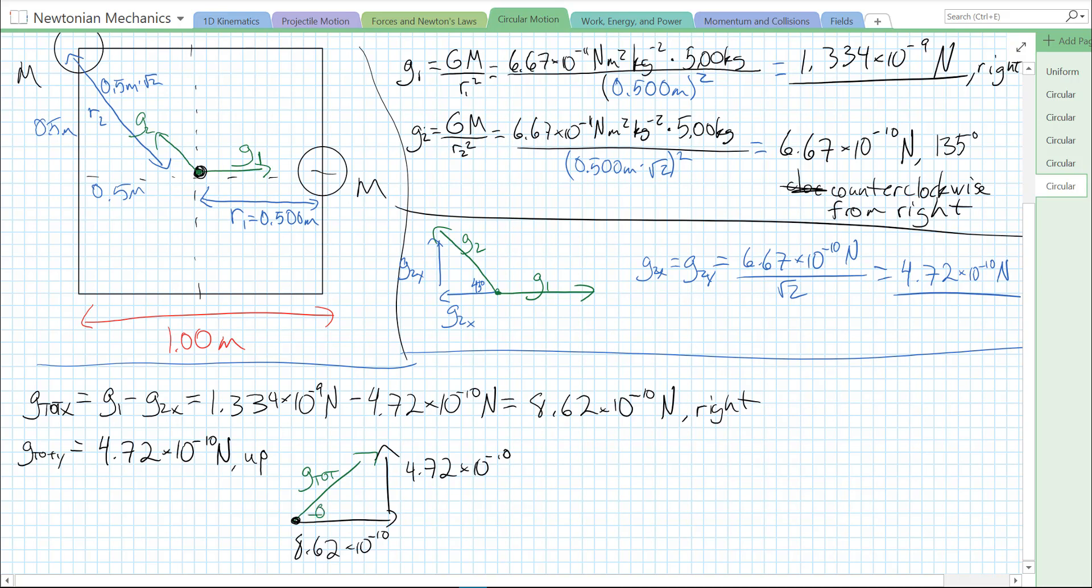So G total is just the square root of G total x squared plus G total y squared. So we can take 8.62 times 10 to the minus 10 squared, plus 4.72 times 10 to the minus 10, that whole thing squared. Then raise them to the 0.5 power to the square root. We get 9.83 times 10 to the minus 10 newtons.